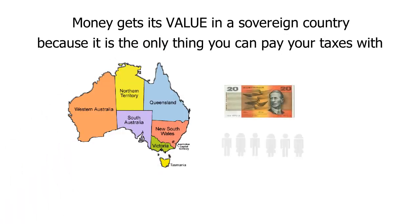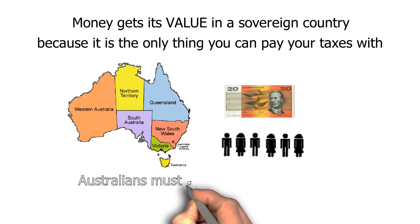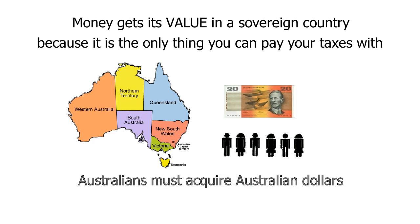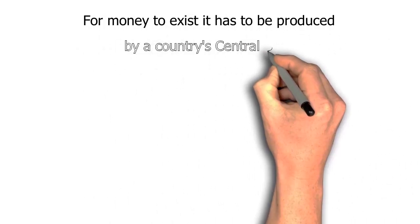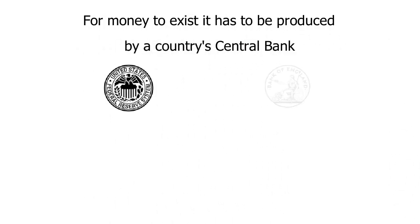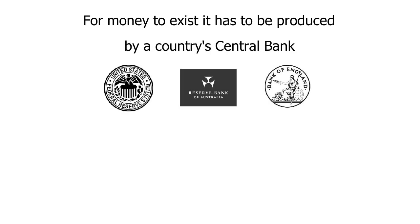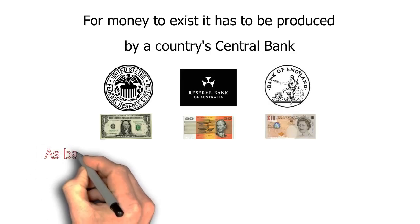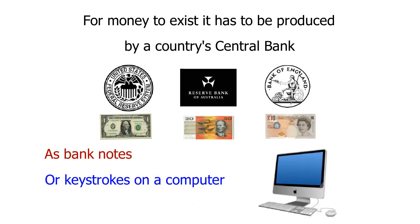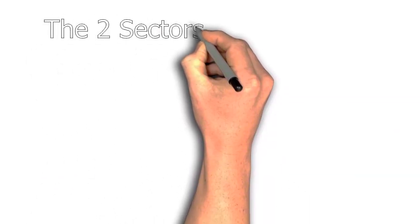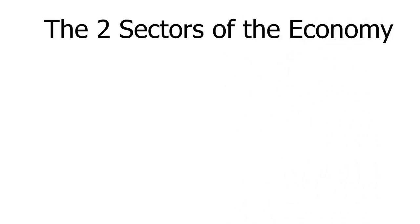In Australia, for example, you can only pay your taxes with Australian dollars. This means that people need to acquire Australian dollars somehow to pay their taxes. For money to exist, it has to be produced by a country's central bank such as the Fed in the US, the Bank of England in the UK or the Reserve Bank in Australia. And this can be in the form of bank notes or just keystrokes on a computer. To understand how money created by the government is brought into circulation, we need to understand the nature of the two sectors of the economy.